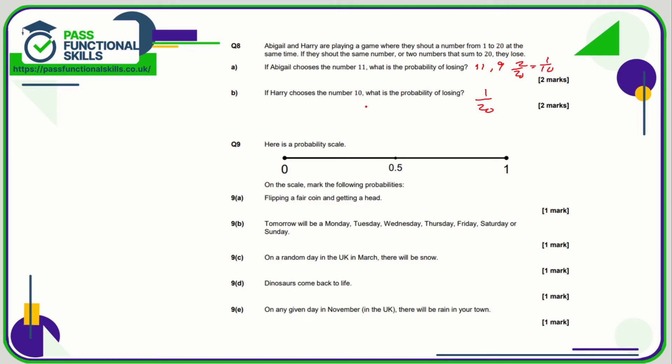Question number nine: So we need to mark on the probability scale the probability of getting a head when you're tossing a coin. Assuming it's a fair coin, so that's 50-50, so 0.5. That tomorrow will be Monday, Tuesday, Wednesday, Thursday, Friday, Saturday, or Sunday. Well that is 100% guaranteed, so we'll put that on one.